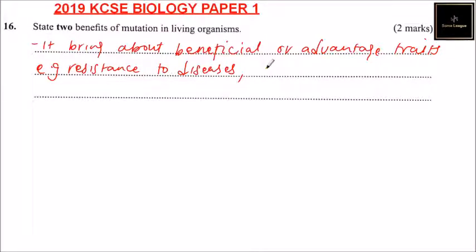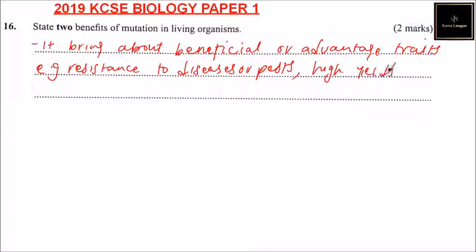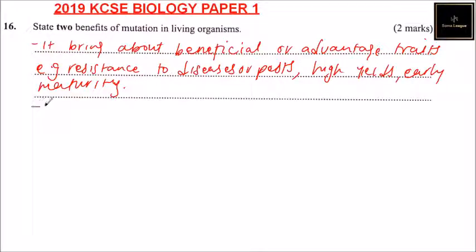For example, resistance to diseases or pests, high yields, and early maturity, as applied in agriculture.